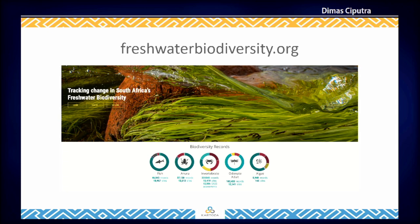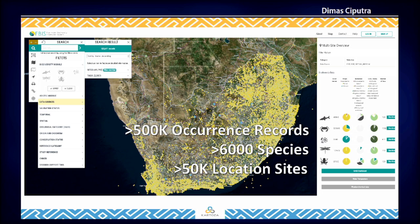FBIS is a Freshwater Biodiversity Information System — a powerful, visual, data-rich information system that serves biodiversity and associated data. FBIS currently serves more than 500,000 occurrence records, 6,000 different species, and more than 50,000 location sites.